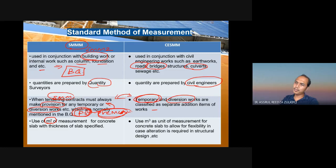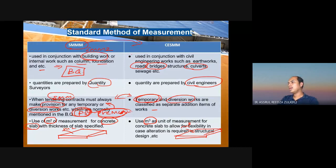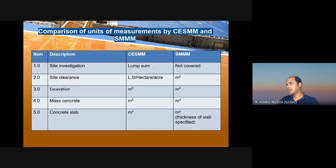A notable difference between SMM and CESMM is in the measurement units. For concrete slab work under SMM, slabs — which are floors — are measured in meter square because they have a thickness. Under CESMM, all concrete-related work regardless of thickness is measured in meter cube. This is the key difference between SMM and CESMM. For example, site investigation works under CESMM use the unit 'lsum', and site clearance uses meter square — these unit differences are captured in the slide.